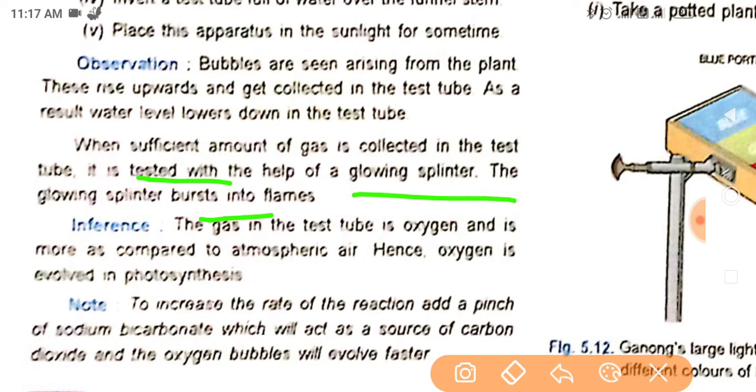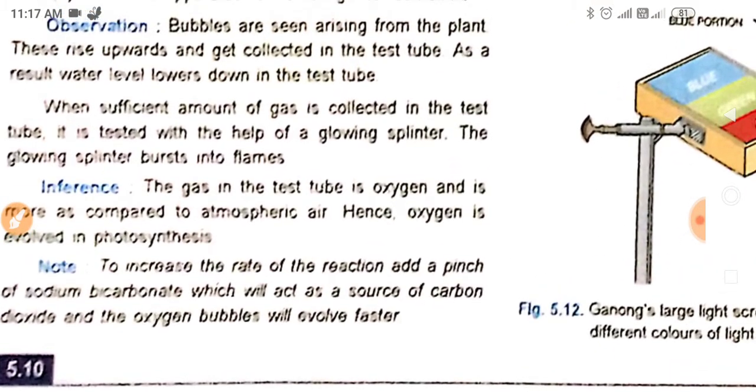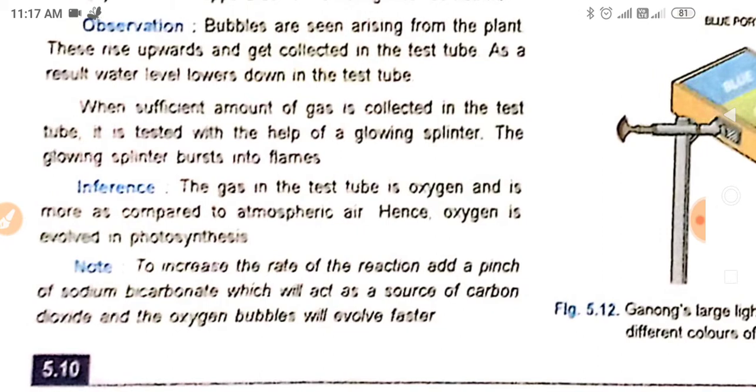The inference from this experiment is that the gas in the test tube is oxygen and is more as compared to atmospheric air. Hence, oxygen is evolved in photosynthesis. To increase the rate of the reaction, add a pinch of sodium bicarbonate which will act as the source of carbon dioxide, and the oxygen bubbles will evolve faster.